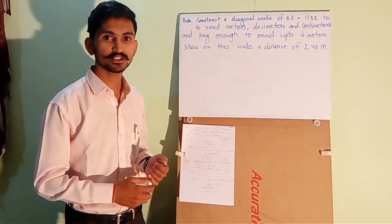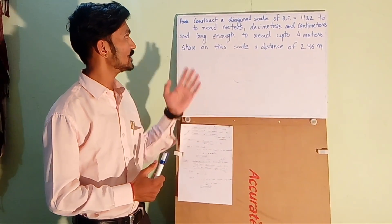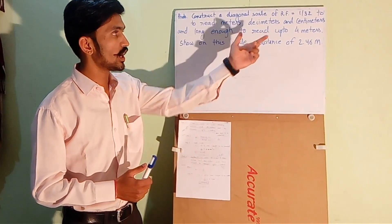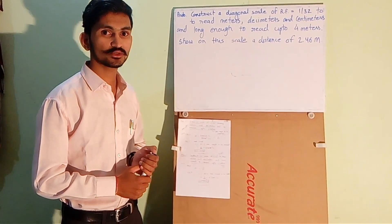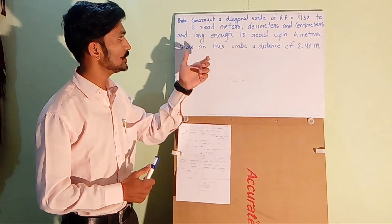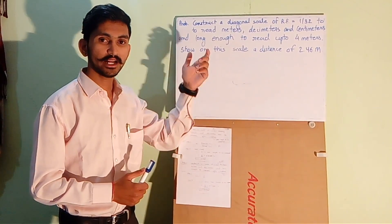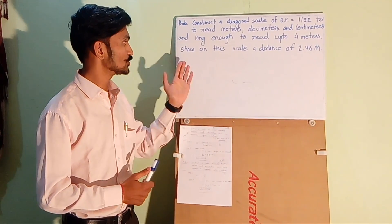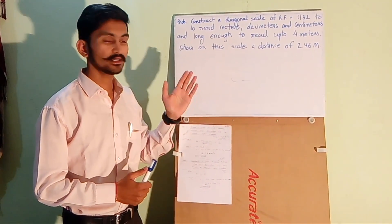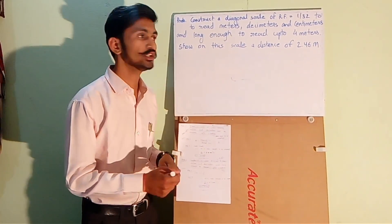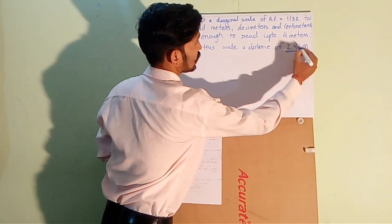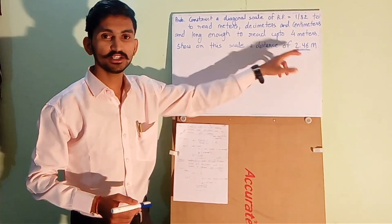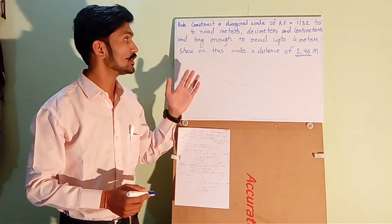So this is the most basic and first question in Diagonal Scale. The question is: construct a Diagonal Scale of RF equals to 1 is to 32 to read meters, decimeters and centimeters and long enough to measure up to 4 meters. So on this scale show a distance of 2.46 meters. This is how we can get to know that we have to construct a Diagonal Scale, but in this question because this is a simple question.